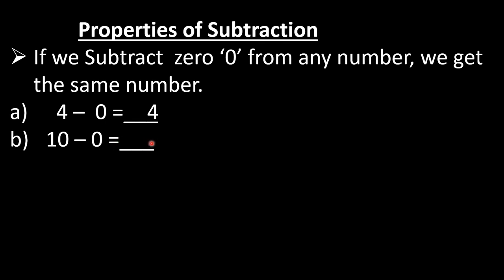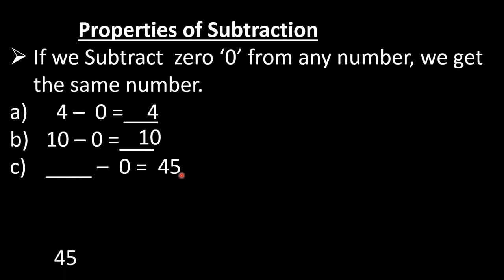Like if we have 10 chocolates and we will not give any chocolate to anyone, how many are left with us? 10. So we will write 10 here. Now in C part, dash minus 0 is equal to 45 — how many are left? The same number, that is 45.